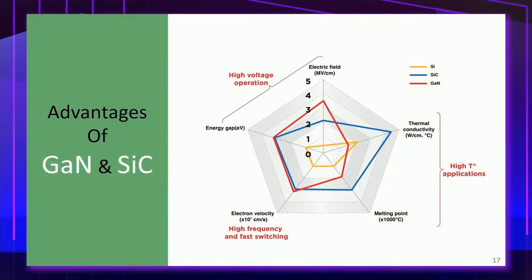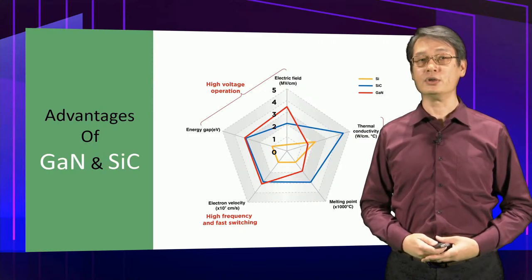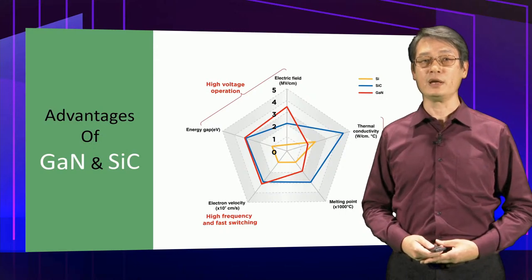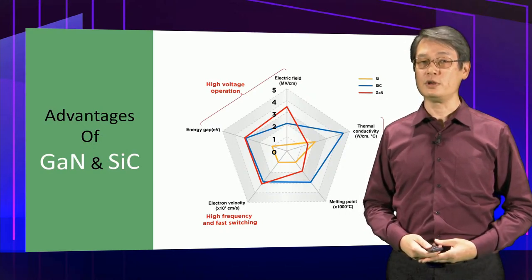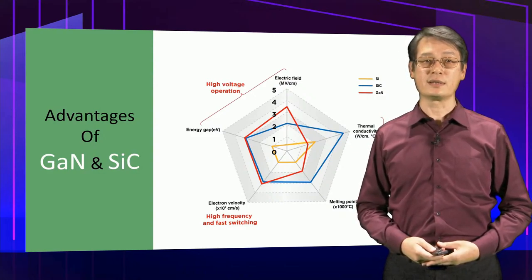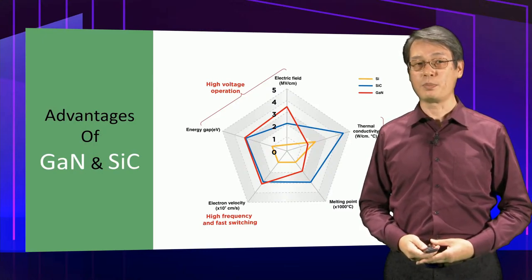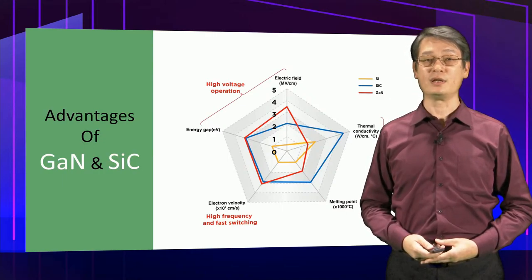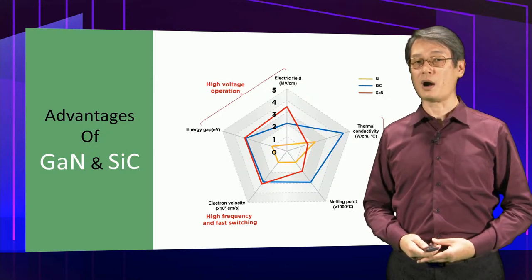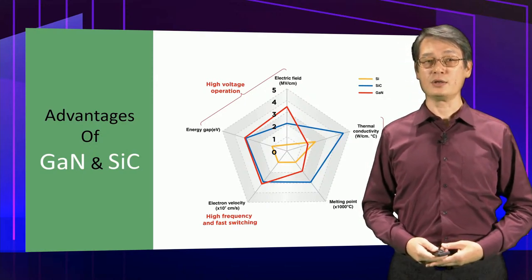Gallium nitride and silicon carbide are a class of compound semiconductors known as wide bandgap semiconductors, with unique material properties for high power and high efficiency applications. Their high breakdown field makes them ideal for high voltage and high power applications. Silicon carbide has extremely good thermal conductivity, helpful for dissipating heat during operation, greatly improving power efficiency. High electron velocity makes both gallium nitride and silicon carbide ideal for high frequency and fast switching power applications, greatly reducing energy loss during power conversion.